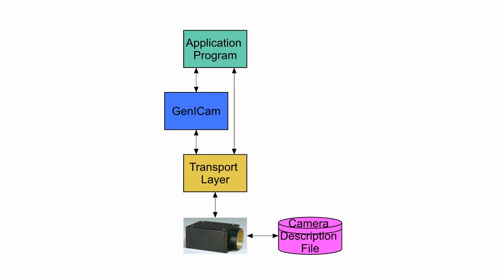Along with the introduction of the GigE camera interface, a better way to manage camera programmability was developed. This resulted in the GenICam specification. GenICam has two parts: a transport layer and a camera description file. The transport layer handles communication with the camera so that the application software does not need to know even what camera interface is being used. The camera description file contains all the information about the camera, along with the specifics on how to program all of its features.